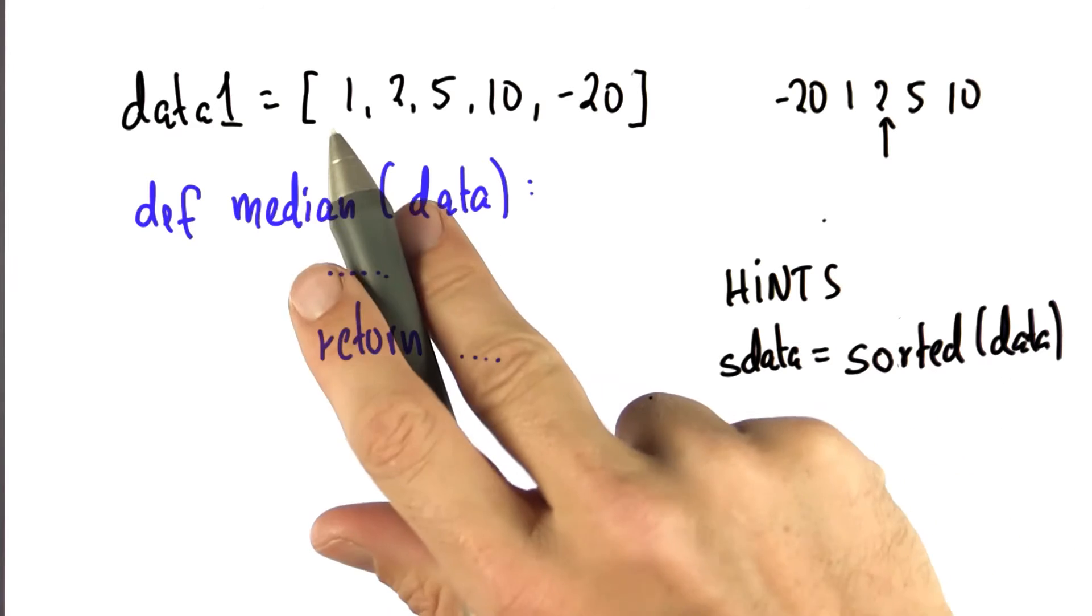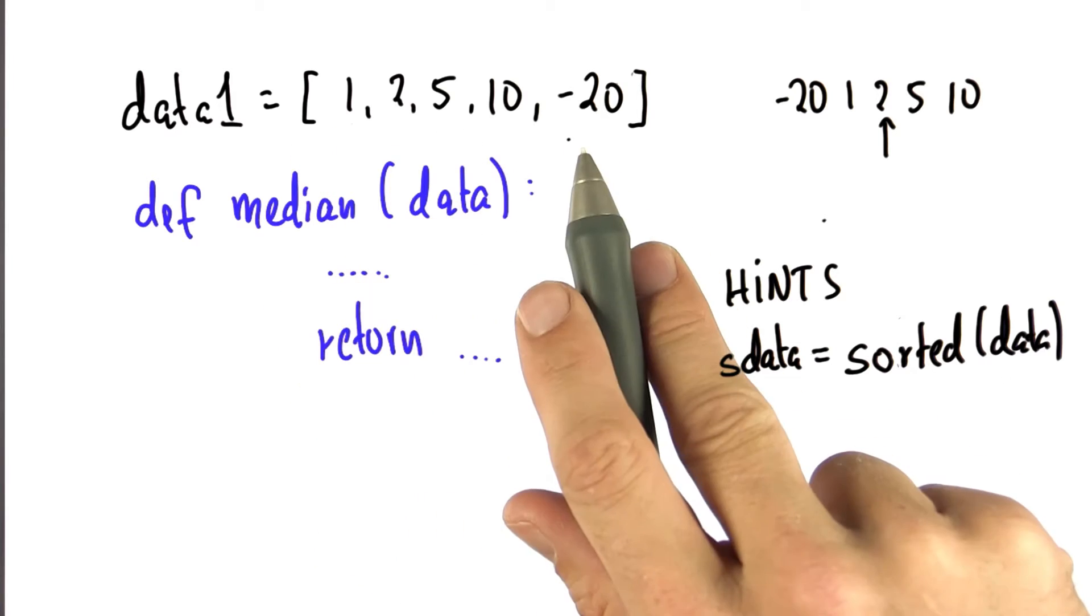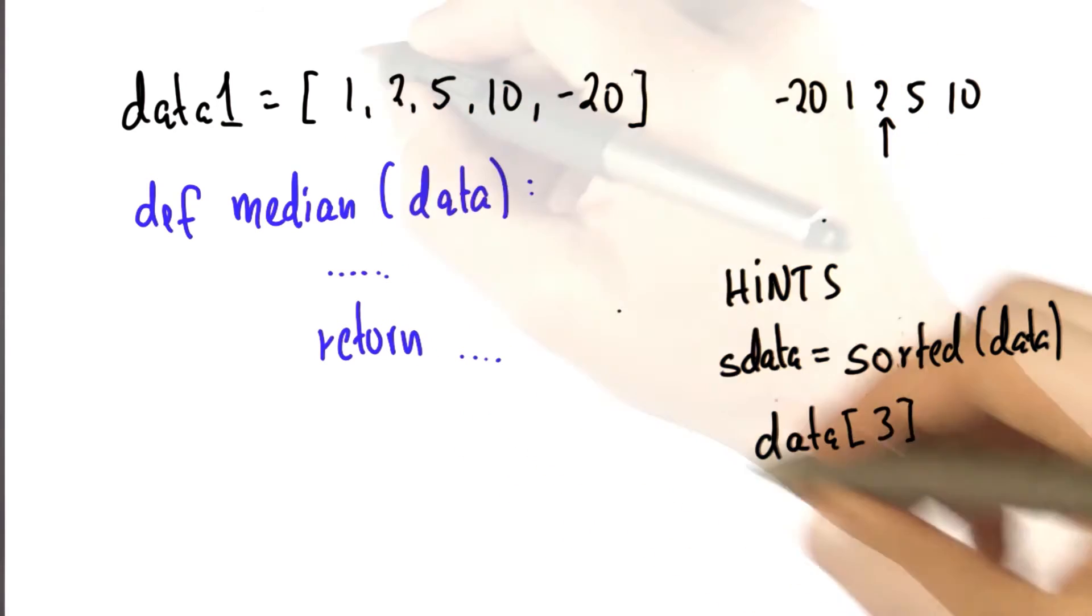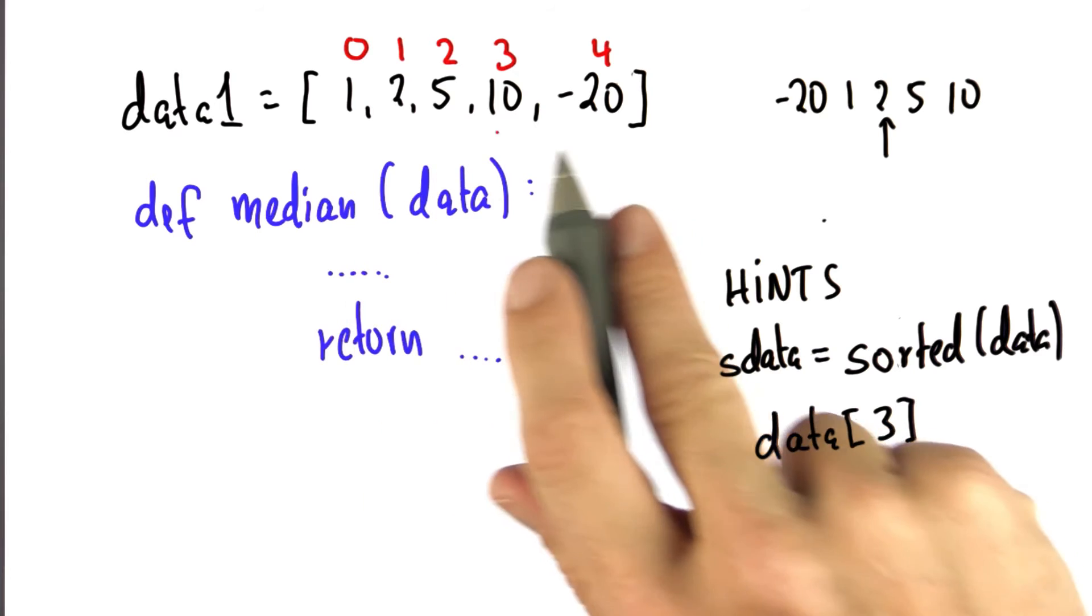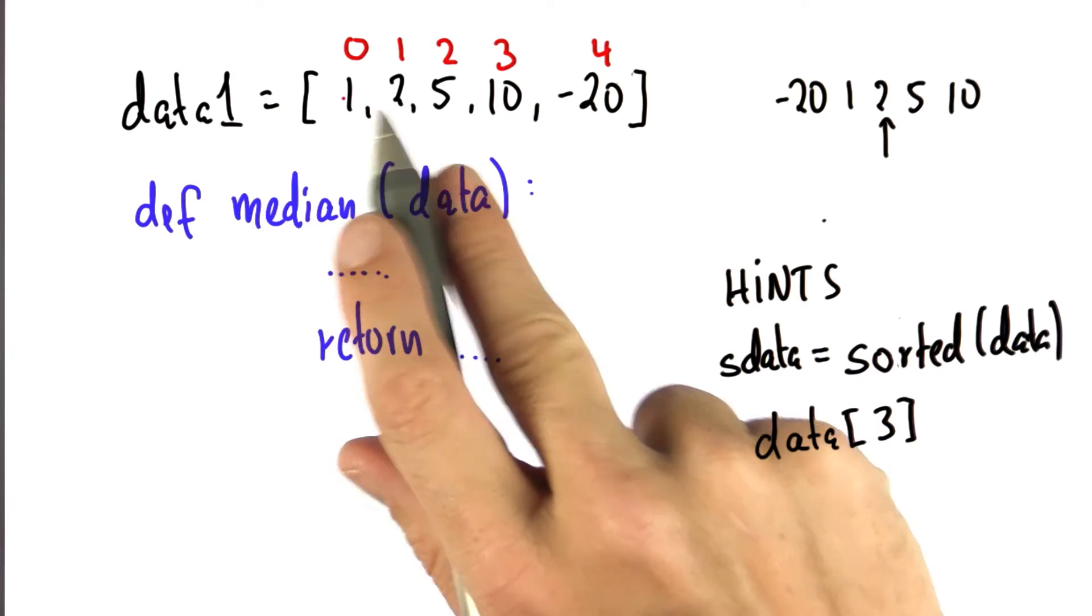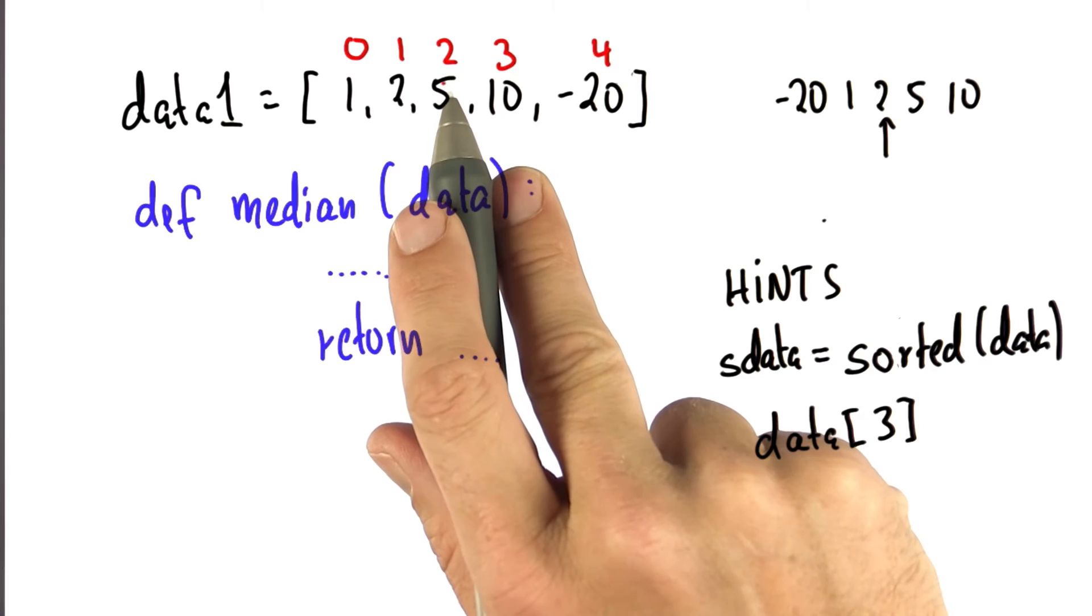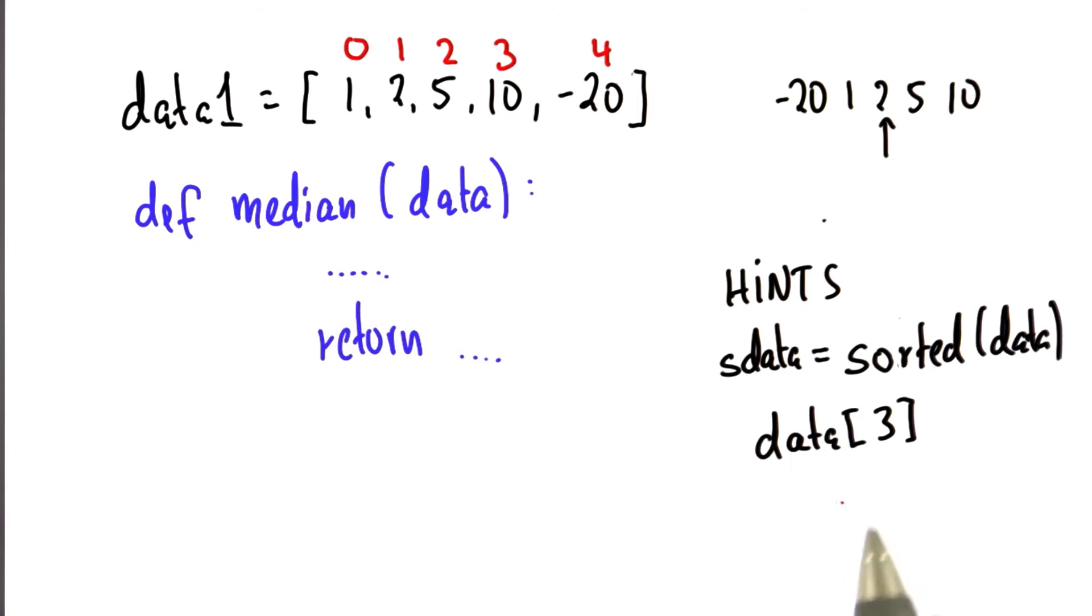And the second thing to know is if you want to access any element in a structure like this, you can do this using notation like this. Now, this is a tricky thing. This doesn't give you the third element in the list. It gives you the fourth. And the reason is each list is indexed starting with zero. So this list has five elements, and the indices go from zero to four. So to get to the center element, you would have to use index number two, and it gives you effectively the third element in the list.